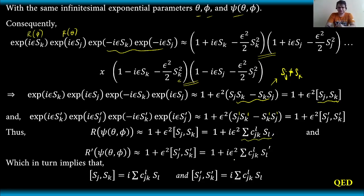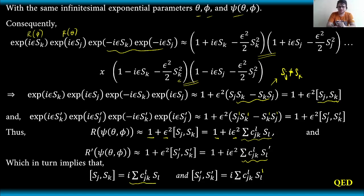Comparing the primed and unprimed expressions, we can directly see that the commutator of Sj and Sk equals i times the sum of the structure constants f_jk^l times Sl. The same holds for the primed ones. This is the proof that the commutator of two generators is also a generator. If you have questions or clarifications about the derivation, or want me to derive something further, please comment in the comment section. Thank you so much.